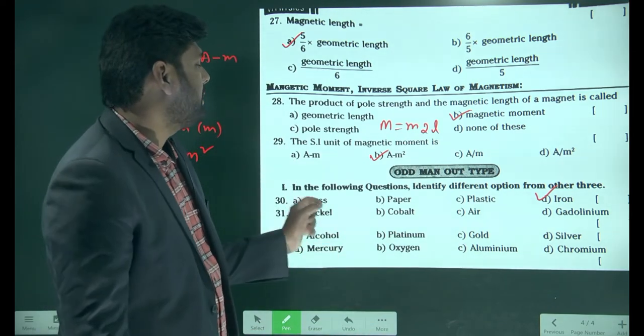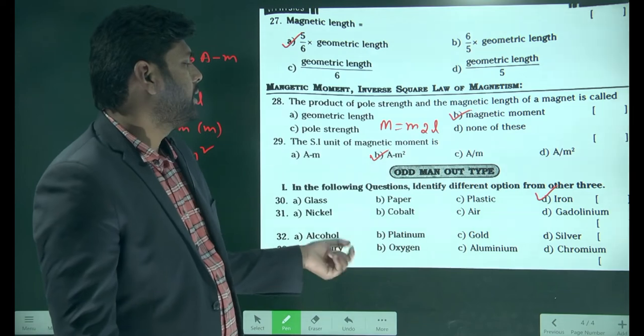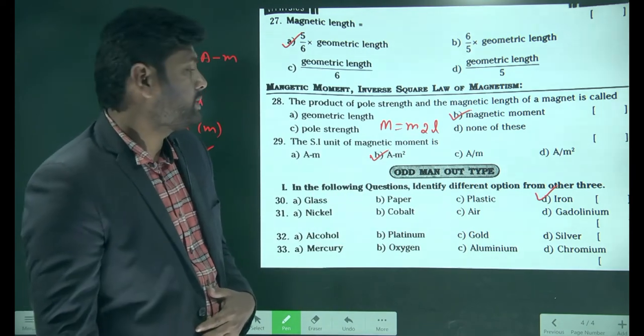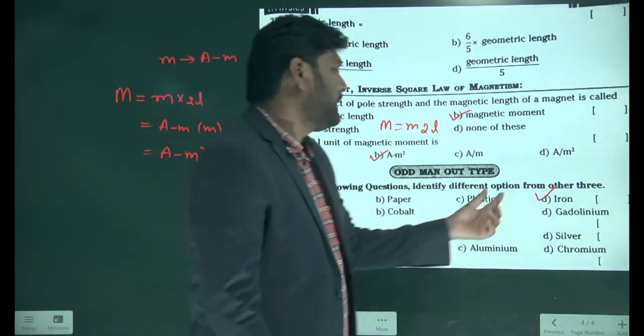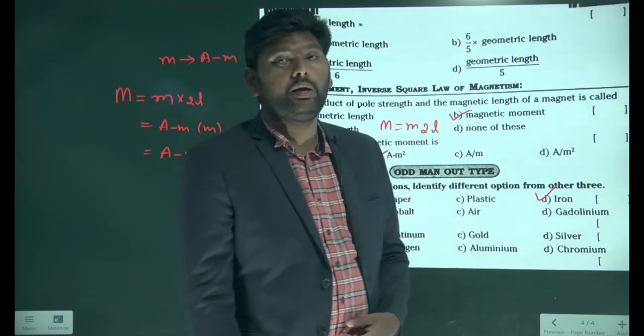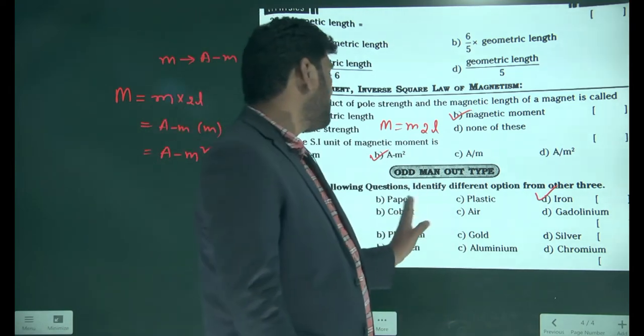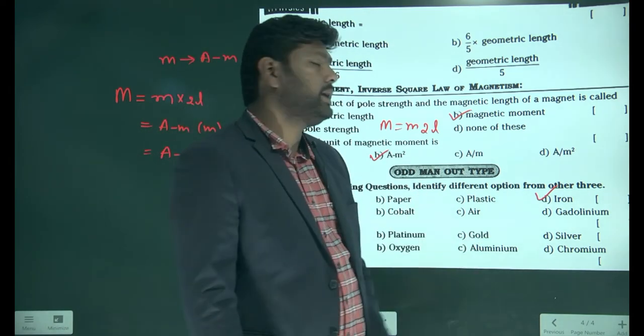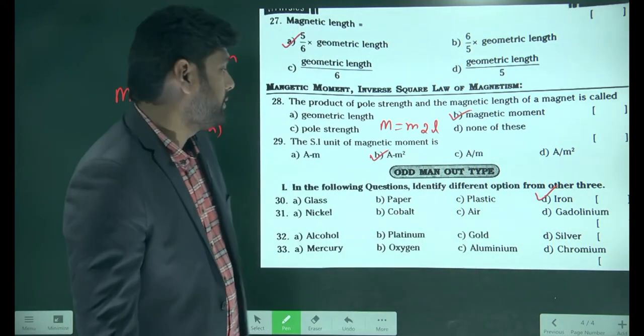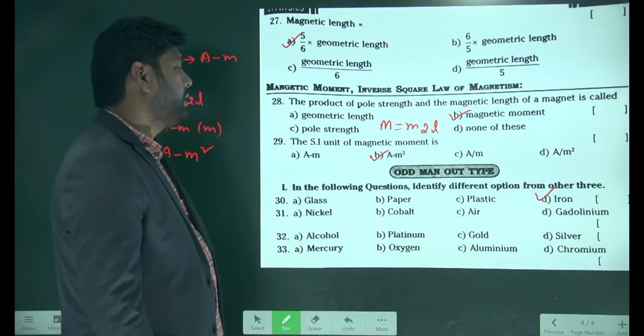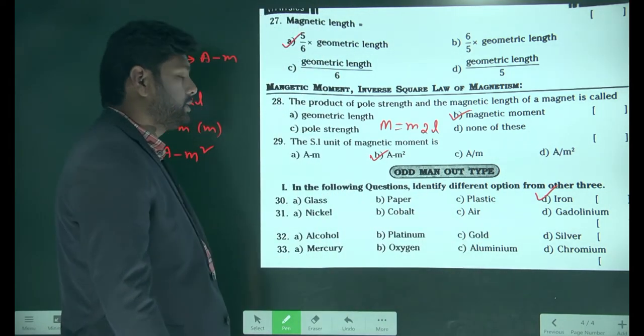When these are diamagnetic materials, those are non-magnetic materials. Since iron is a magnetic material, among all, iron is the odd option.